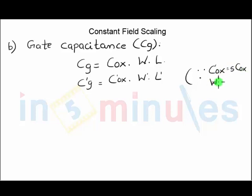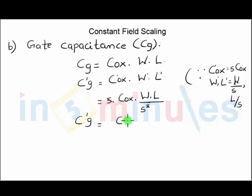So when we substitute this, what we get is s into COx into W by L upon s square. So when we cancel off the s, what we get is after scaling the gate capacitance is nothing but before scaling divided by s.